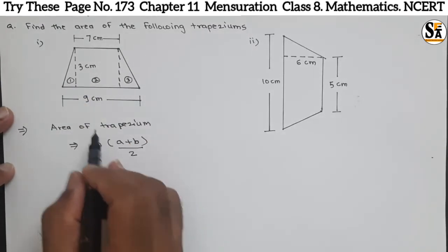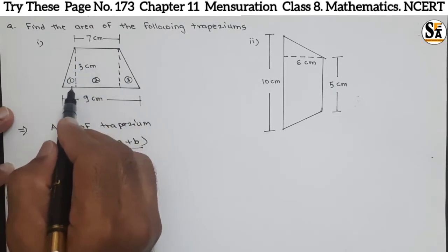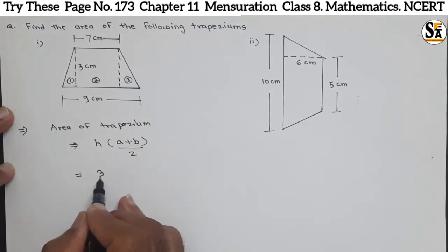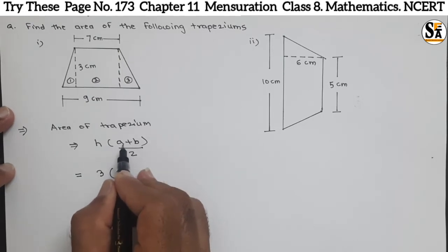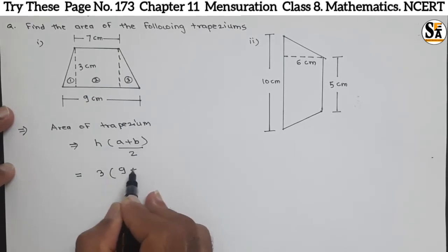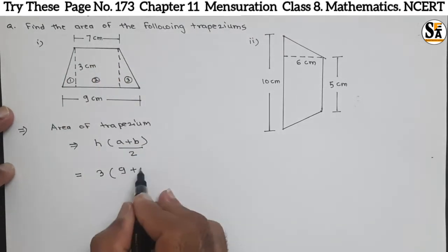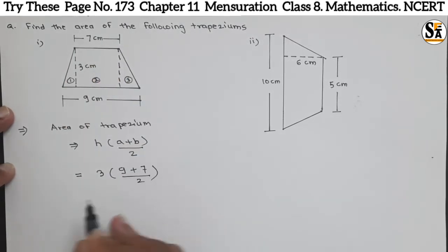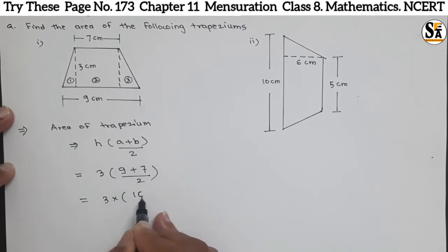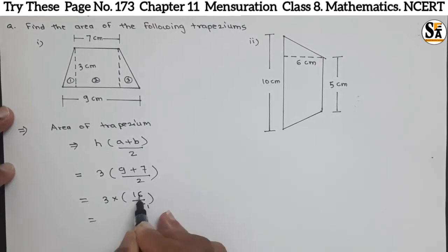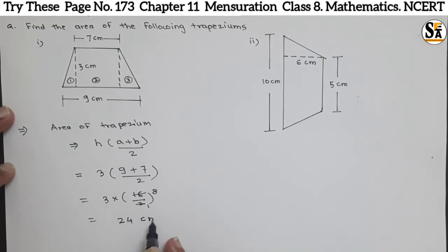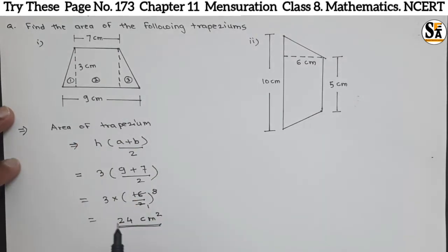For the first trapezium, the perpendicular distance h is 3 centimeters, parallel side a is 9 centimeters, and parallel side b is 7 centimeters. So the area is 3 into bracket (9 plus 7), that is 16, divided by 2. Reducing: 16 divided by 2 is 8, so it is 3 into 8, which equals 24. The unit is centimeter square, so the area of the first trapezium is 24 centimeters square.